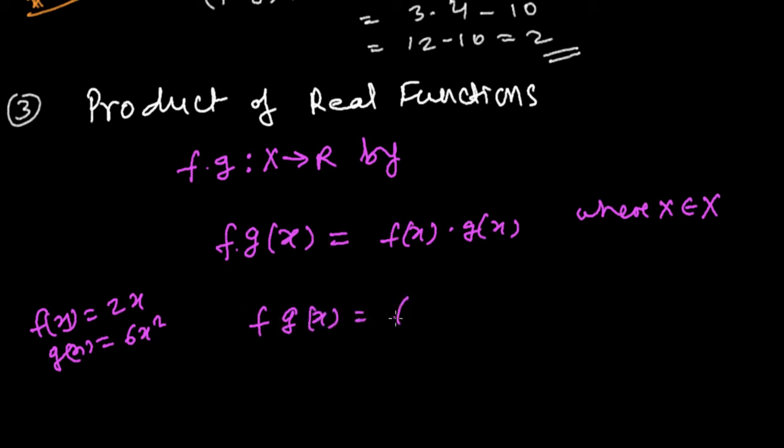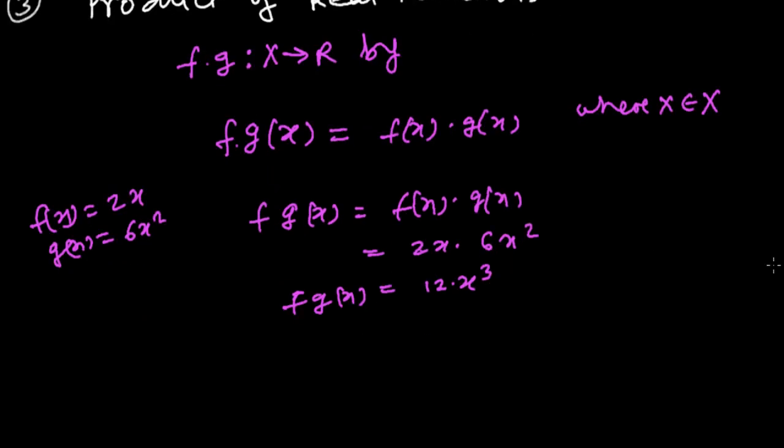So it's going to be f of x times g of x, and it is 2x and this is 6x squared, so it's going to be 2 times 6, that is 12, and x times x squared, that is x cubed. So fg of x, fg of x is 12x cubed. This is the product of two functions f and g.